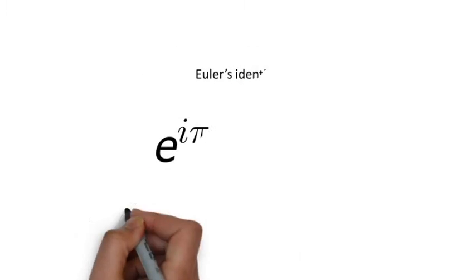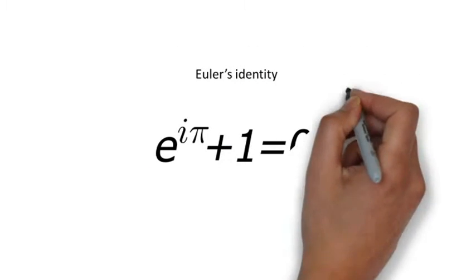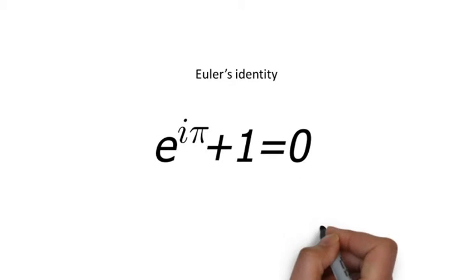And now for the world's most beautiful equation. It is just proof that e to the i describes a circle which has radius 1 and center 0.